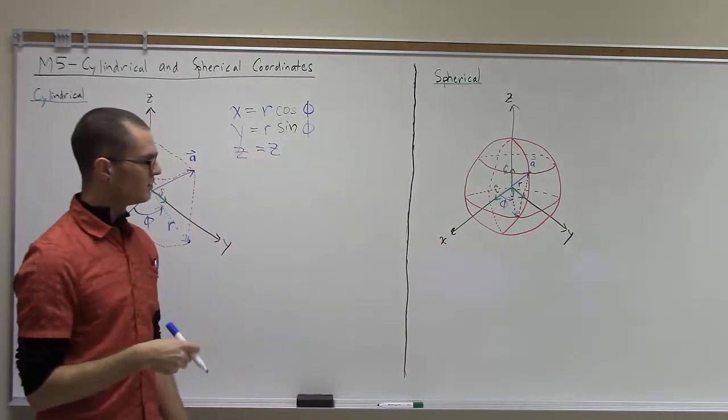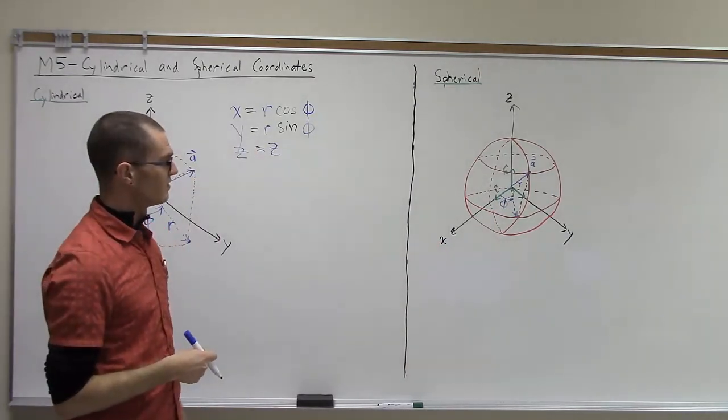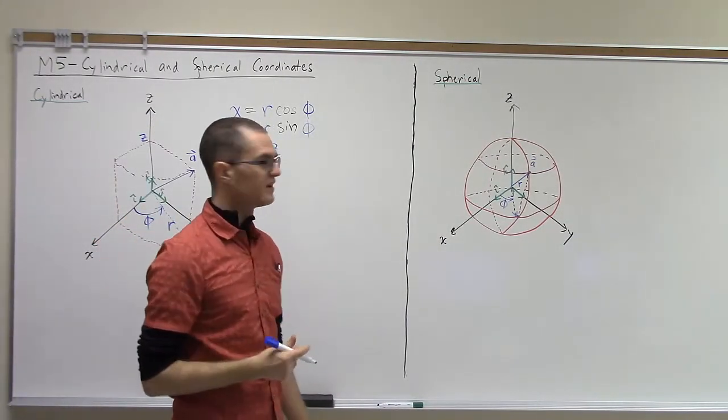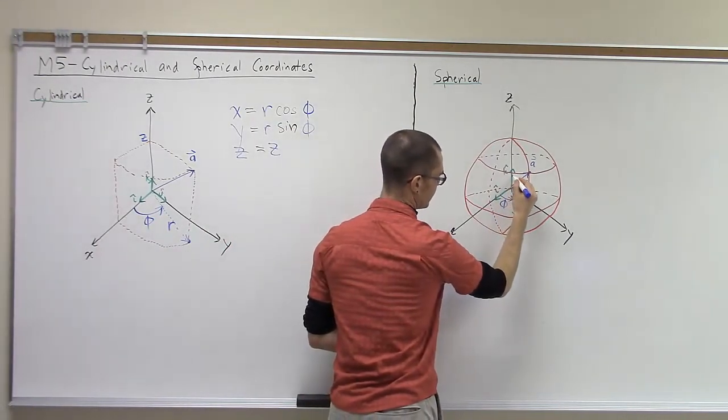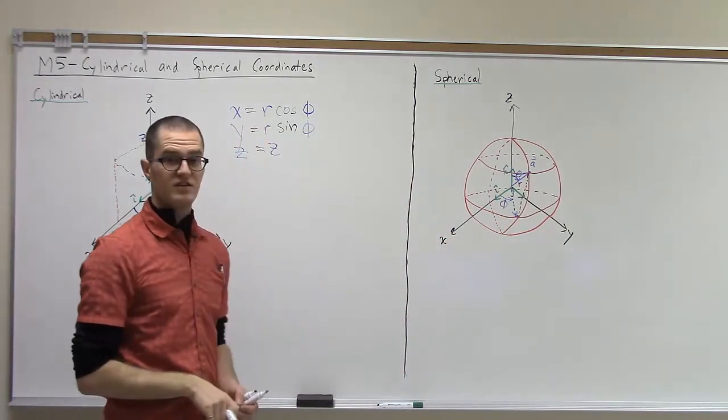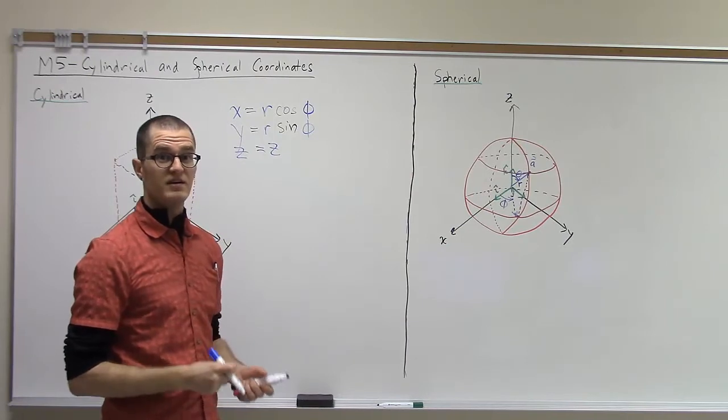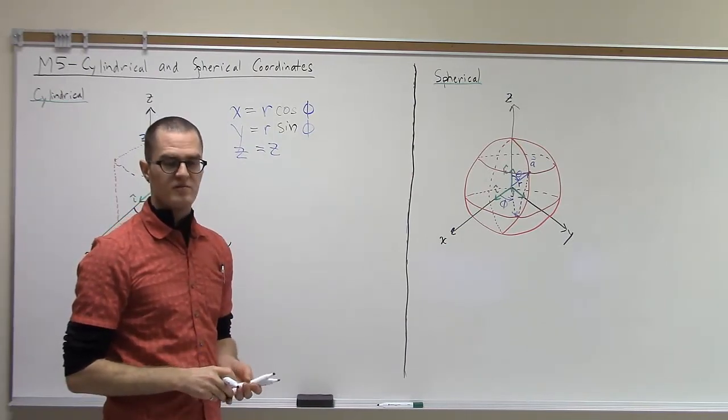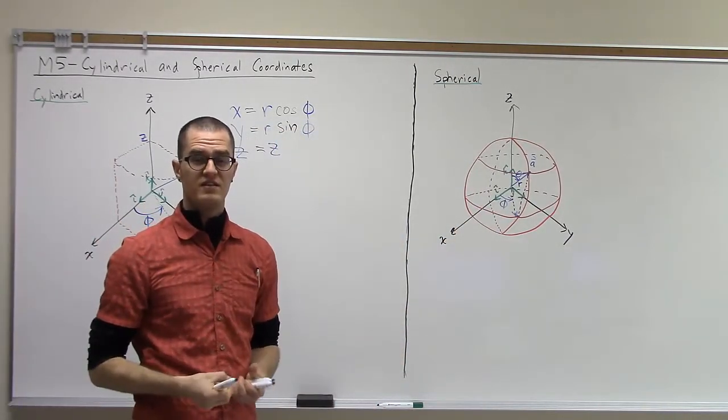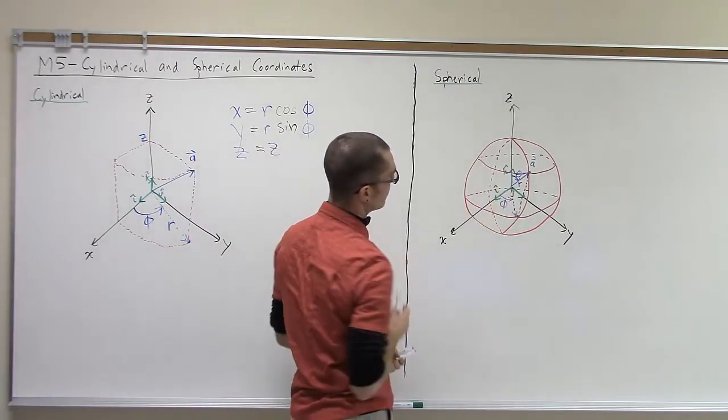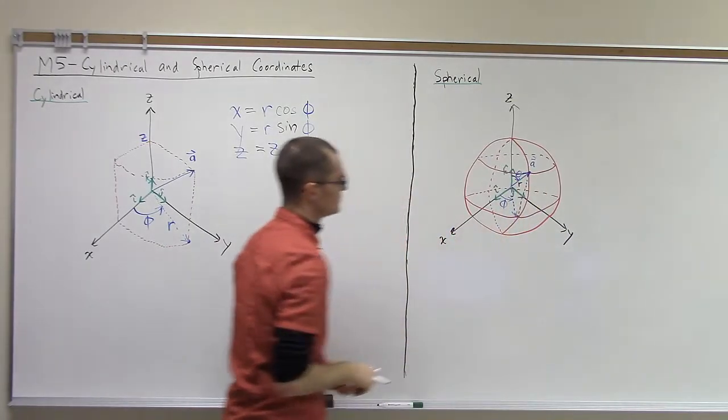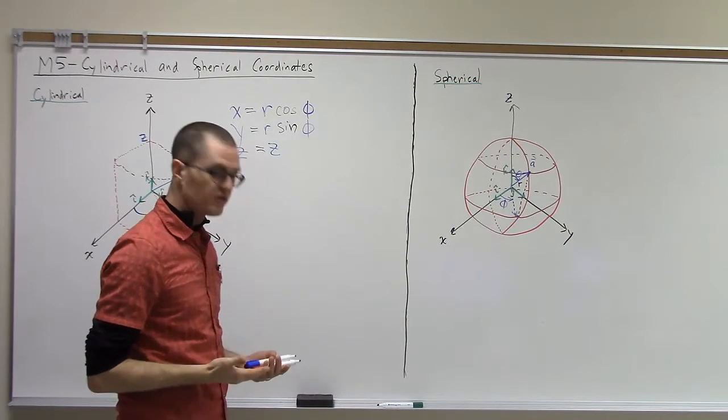And then the latitude I'll define as a third angle, or a second angle, and I'll call it theta. And that's measured relative to the z-axis. So if you think back to one of our earliest videos on basics of vectors, this theta here is the direction cosine in the z-direction, because it's the angle relative to the z-axis of this vector a. Okay, so in this coordinate system, we can again write the relationship between the cartesian coordinates and the spherical polar coordinates.